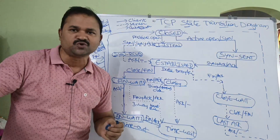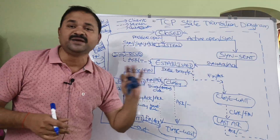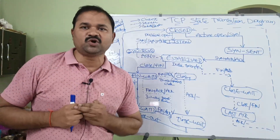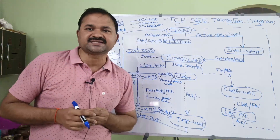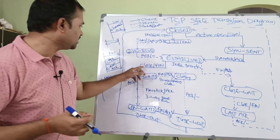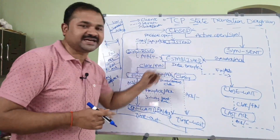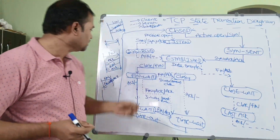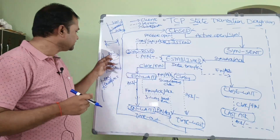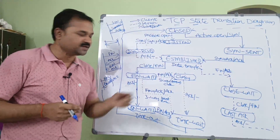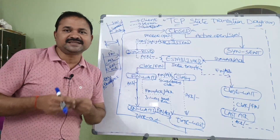Data transfer between client and server happens in the established state. Now let us discuss connection termination. When the client has no more data to send, it issues a close command, meaning the client sends a FIN segment to the server. If the client wants to close its connection with the server, it sends a FIN segment, and the server sends acknowledgement.